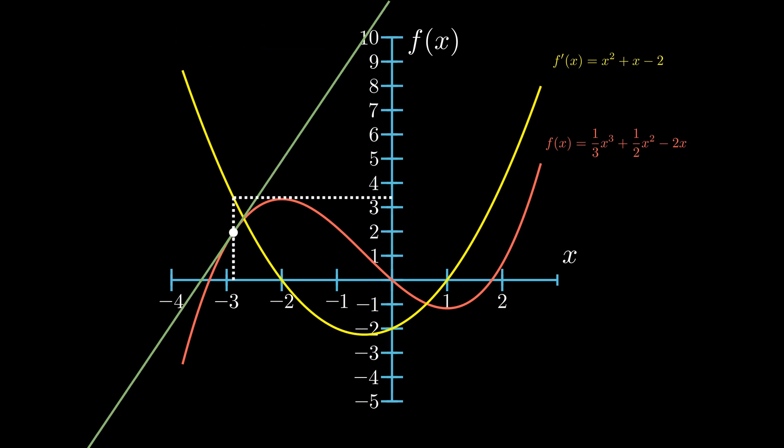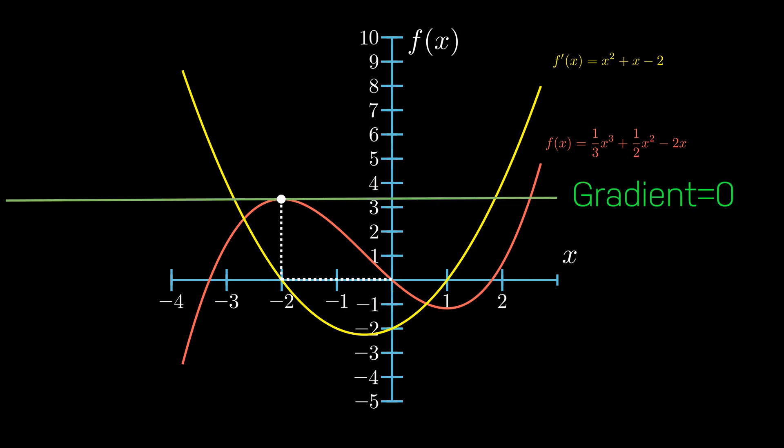As this point shuffles along to x being equal to negative 2, the corresponding y values on f'(x), at this exact x point of negative 2, the slope is flat. In other words, the gradient is equal to 0.